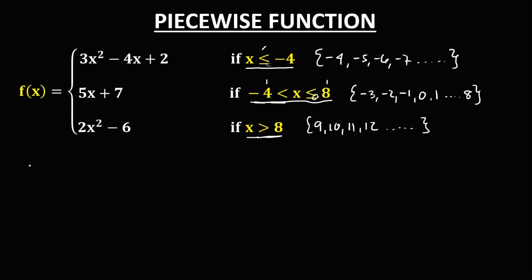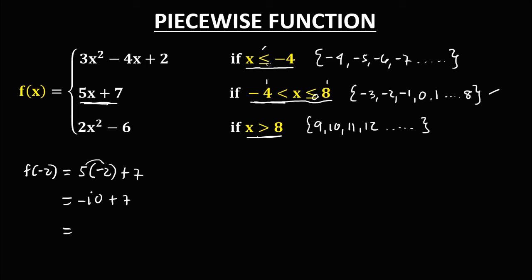For f(-2): since negative 2 belongs to this set of numbers, we are going to use this equation to solve for f(-2). So we have 5 times x, where x equals negative 2, plus 7. That gives us 5 times negative 2, which is negative 10, then plus 7, so negative 10 plus 7 equals negative 3. Therefore, f(-2) is equal to negative 3.